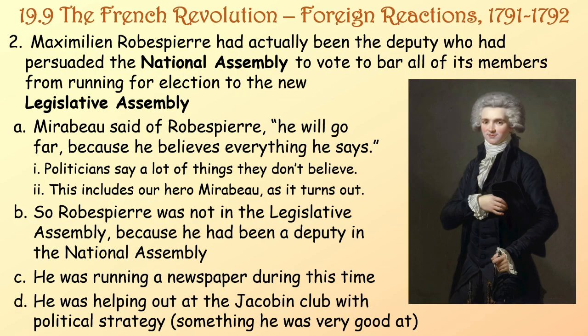Maximilien Robespierre had actually been the deputy who persuaded the National Assembly to vote to bar all of its members from running for the new Legislative Assembly. Mirabeau said of Robespierre: 'He will go far because he believes everything he says.' So Robespierre was not in the Legislative Assembly — instead he was running a newspaper and helping out at the Jacobin Club with political strategy, something he was very good at.